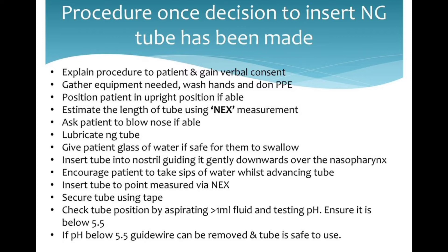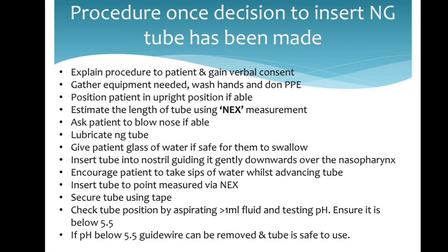Insert the tube to the measured point and secure it using tape. Check the tube position by aspirating one milliliter of fluid and testing the pH. Ensure the pH is below 5.5. If the pH is below 5.5, the guide wire can be removed and the tube is safe to use.